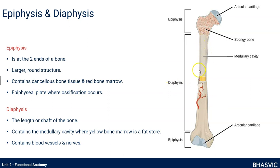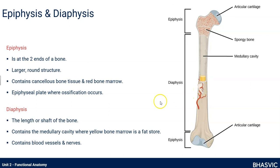The diaphysis is the long shaft of the bone, the length of the bone. It's got inside it a cavity called the medullary cavity. You can see the yellow stuff here — the medullary cavity contains yellow bone marrow, which is a fat store. There are also blood vessels and nerves throughout the diaphysis.